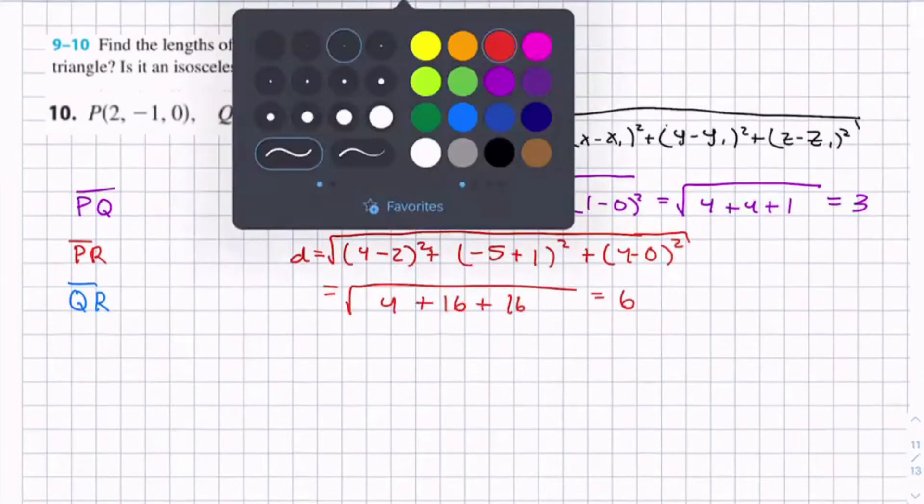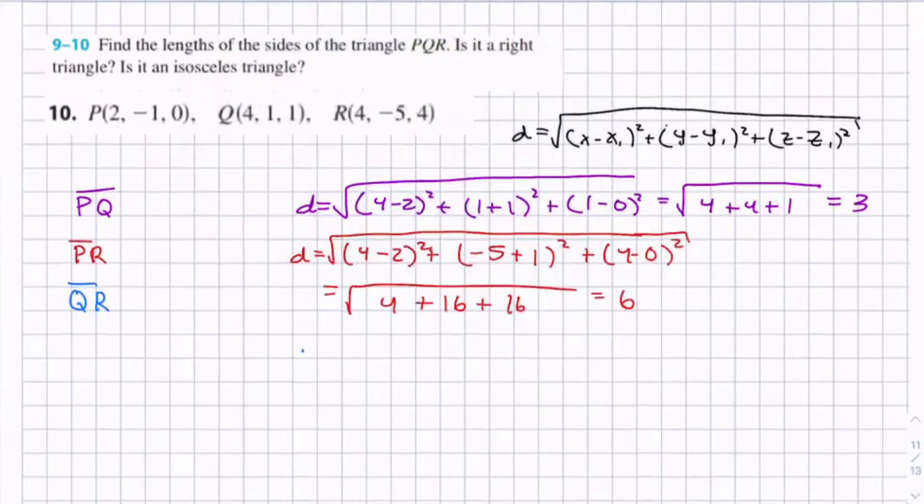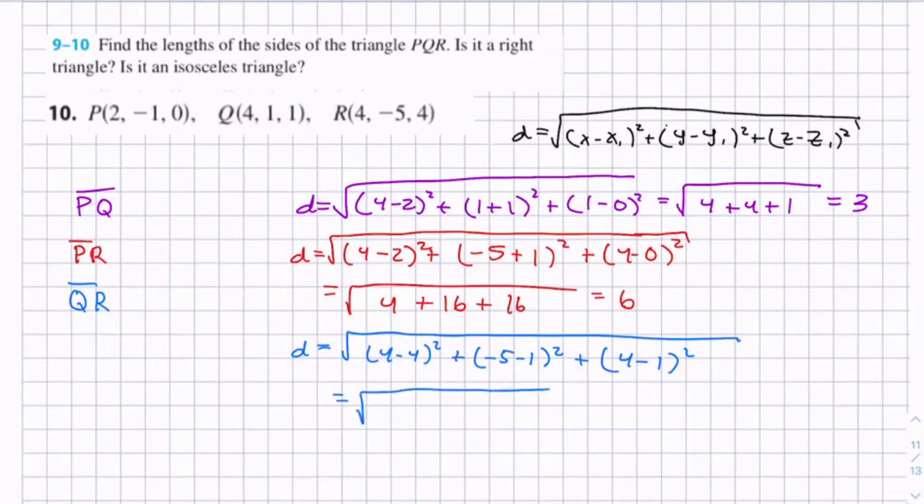So now if you find the distance of the line segment QR, you get distance is (4 - 4)² plus (-5 - 1)² plus (4 - 1)², which equals 0 plus 36 plus 9, which equals the square root of 45.